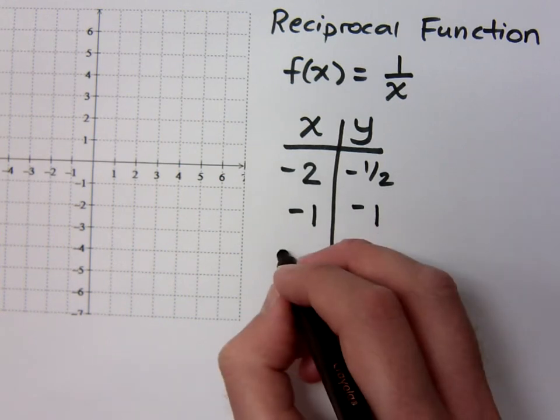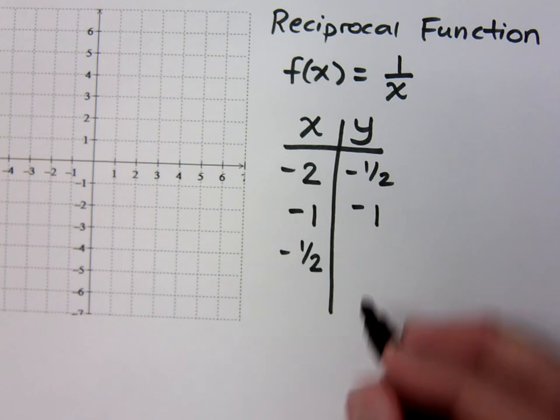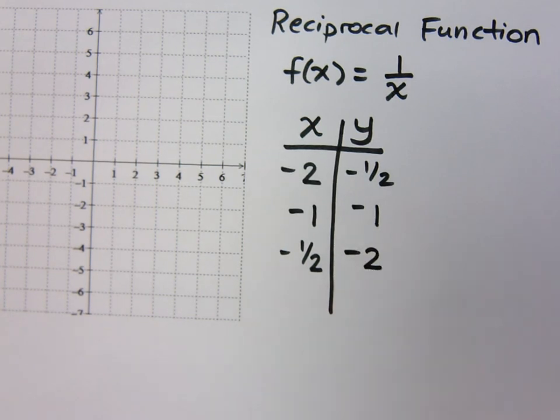What if I plug in negative 1 half? The reciprocal of negative 1 half is negative 2. Does that make sense? The reciprocal function takes any of your input values and it turns them upside down.